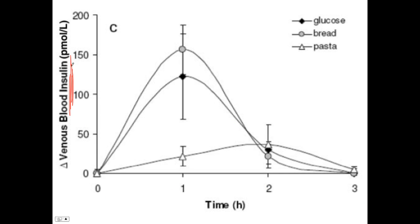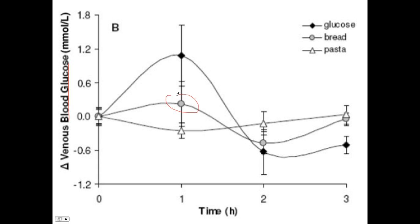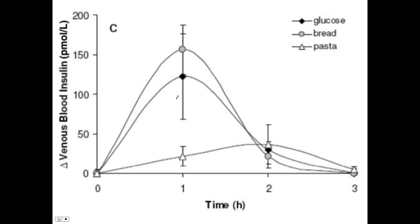This is going to be the blood insulin response. Remember, insulin is a driver of cholesterol production. Look what happens after consuming bread — it beats insulin, and it beats glucose. Just because you had less of a blood glucose response with bread does not mean you were protected from the insulin surge. If you compare glucose and bread — essentially soda and white bread — to pasta, you can see a minimal insulin response to pasta.